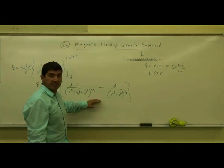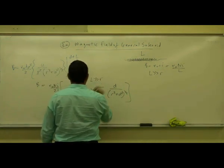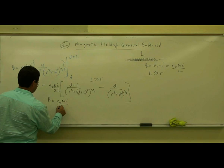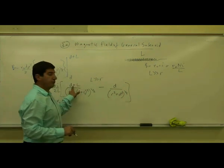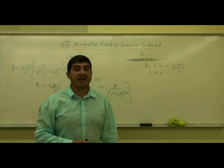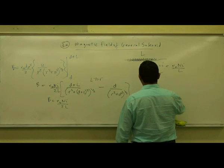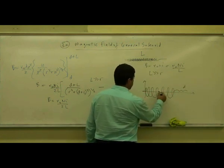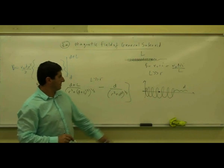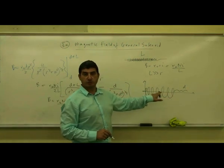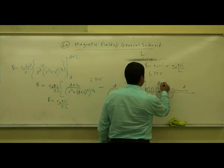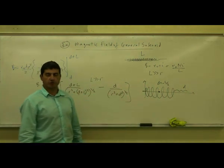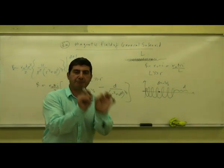Let's verify that our result gives the same answer. When L is much larger than R, and we evaluate at the midpoint of the solenoid, we set D equal to negative L over 2. Substituting D equals negative L over 2, the term D plus L becomes L over 2, giving L over 2 over (r squared plus L squared over 4) to the one-half. By symmetry both terms are equal and add together.